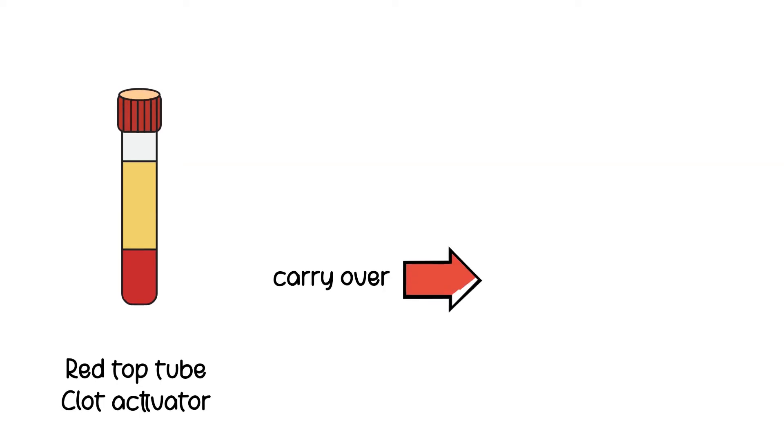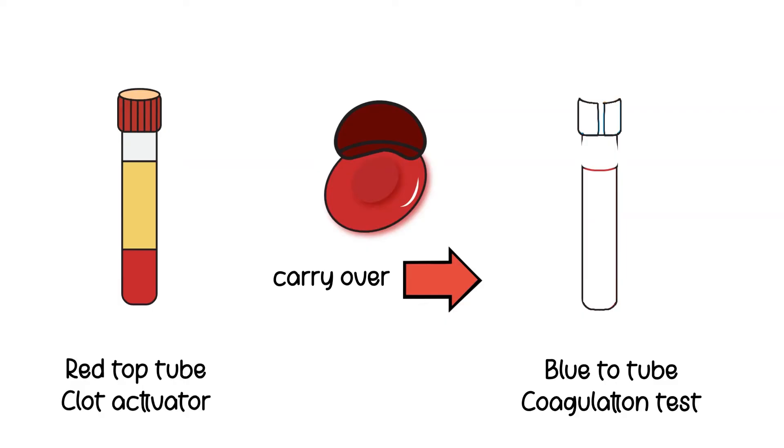Another example is if you collect a clot activation tube and then have a carryover to a tube for coagulation test, which is the blue top tube. This can interfere with the test results as well.